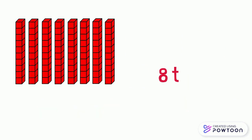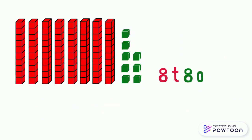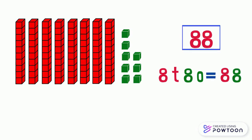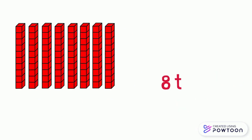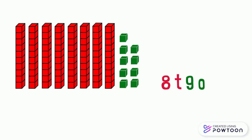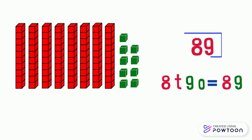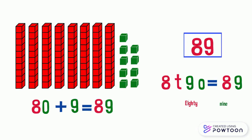8 tens and eight ones represent the number 88. 80 plus 8 equals 88. 8 tens and nine ones represent the number 89. 80 plus 9 equals 89.